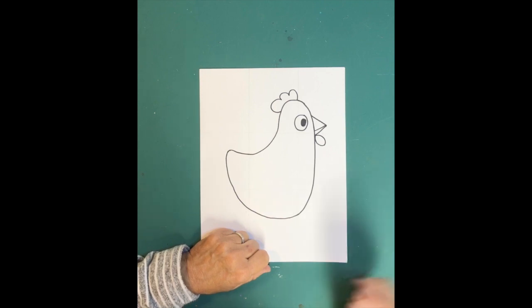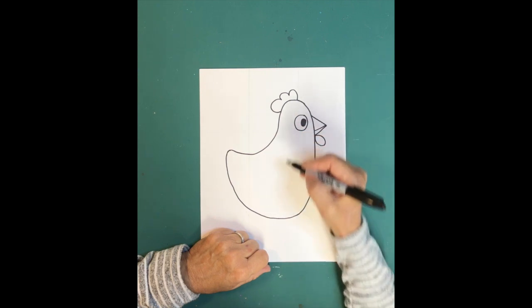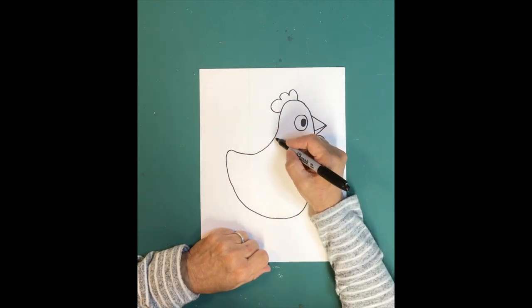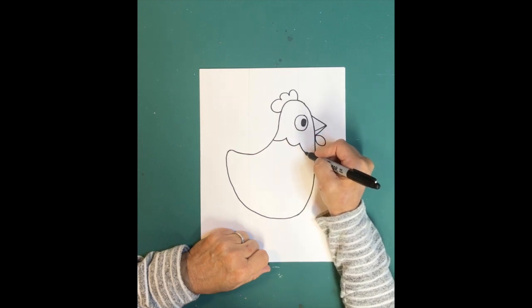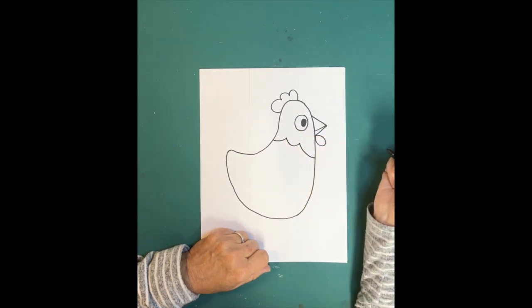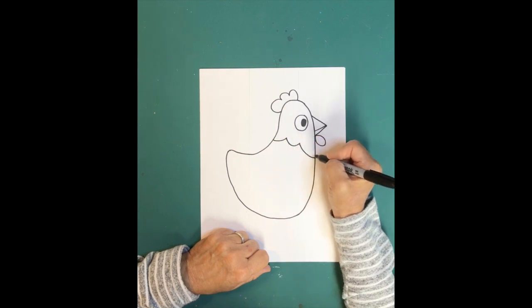Chickens are all different colors, so you can color your chicken any color you want. But to give it some definition, we're going to be separating the top part of her color from the bottom part of her color. If you can make a series of lines that go like this, almost like a zigzag. That was just like that, like drawing a mountain almost.